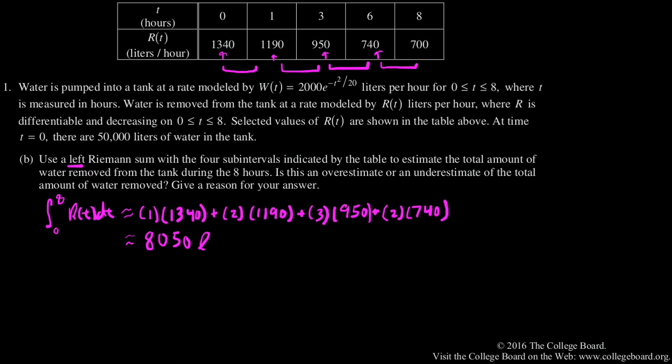And now, is it an overestimate or an underestimate of the total amount of water removed? Well, we see that R is decreasing on this interval, which means that the curve or the function for R is going to be something like this. It's decreasing. We have left Riemann sums, which means each of the rectangles has gone to the left side. So my rectangle is going to look like this. I have four of them.